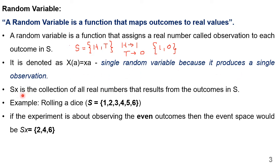Xx is a collection of all real numbers that results from the outcomes in X. Or we can say Xx is a subset of X and it is also known as an event space. For this example, if I am going to observe only head being tossed up, then the set {1} is called Xx.